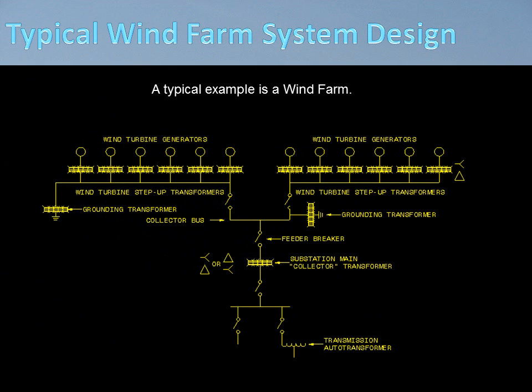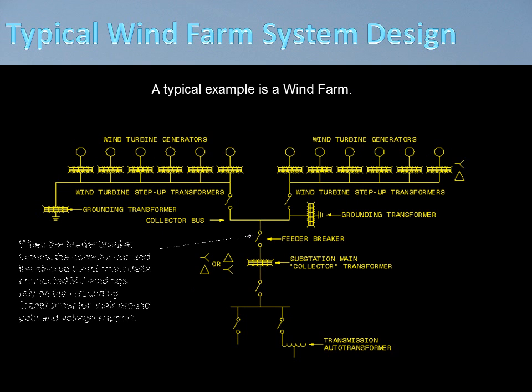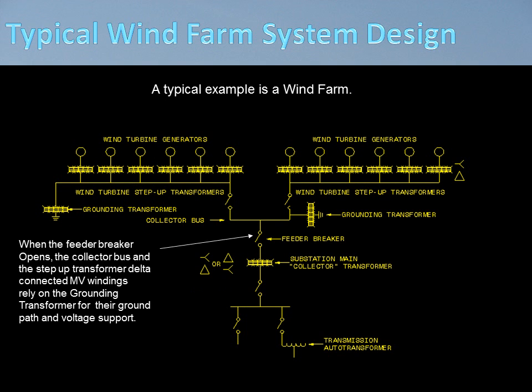This is a typical wind farm schematic illustrating the grounding transformer application. When the feeder breaker opens, the collector bus and the step-up transformers' delta-connected medium voltage windings all rely on a grounding transformer for the ground path.